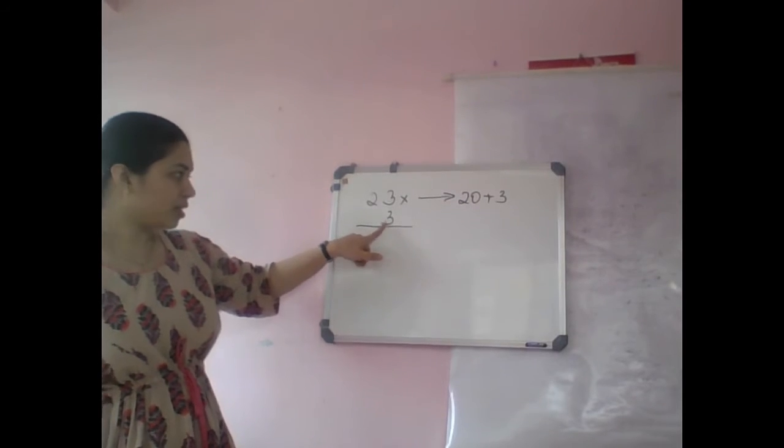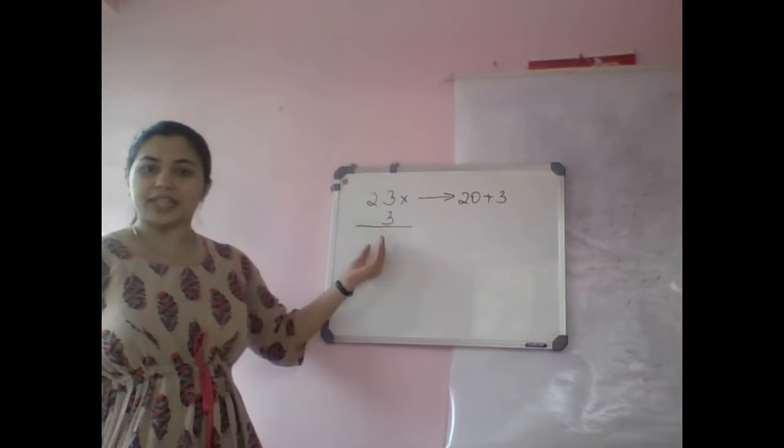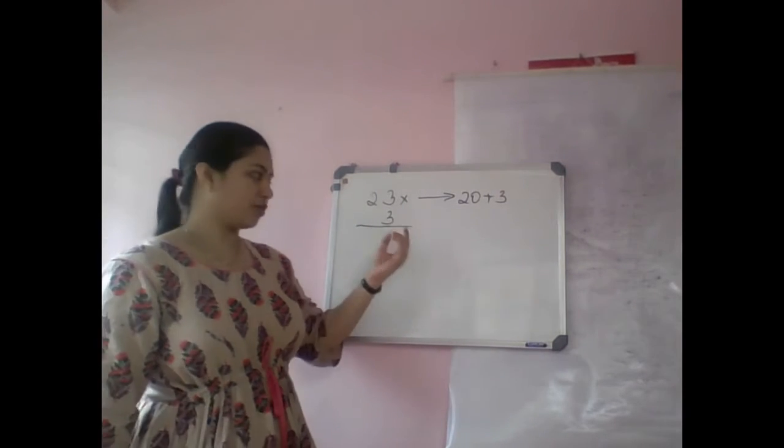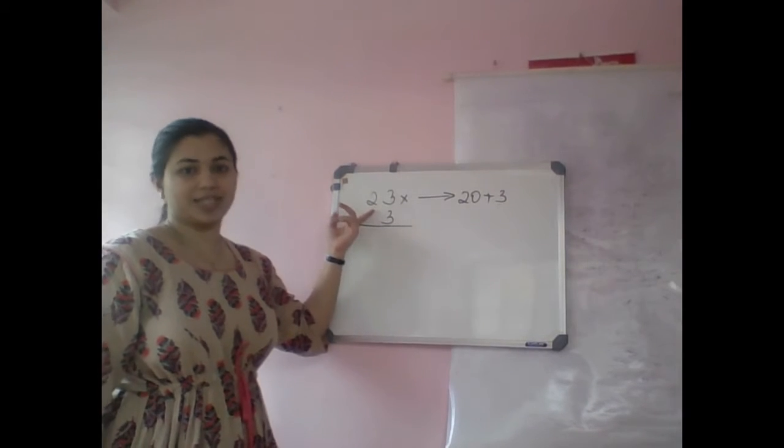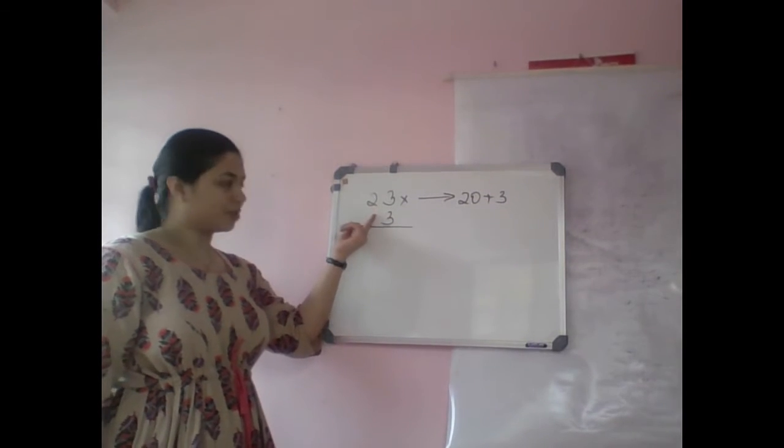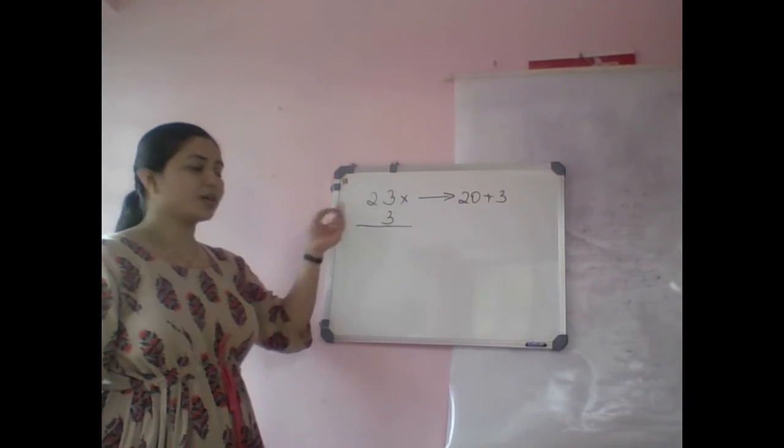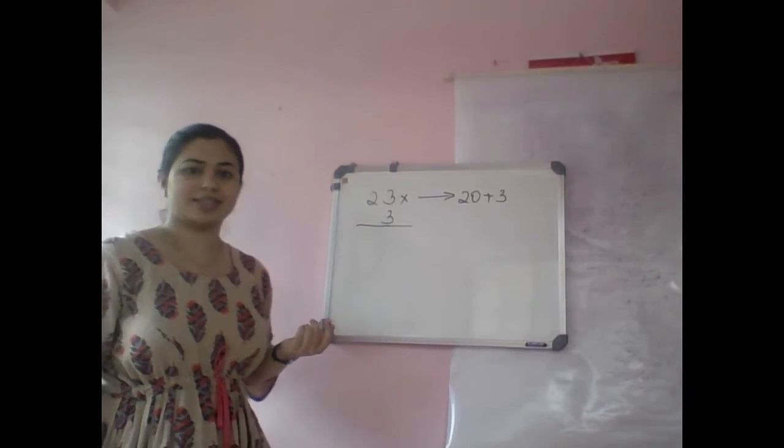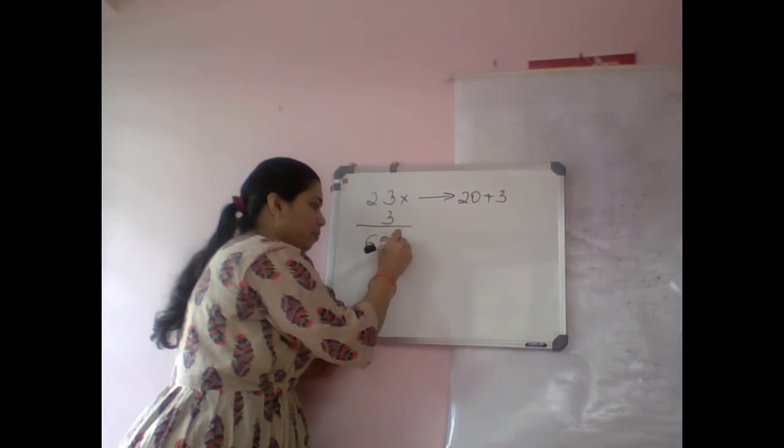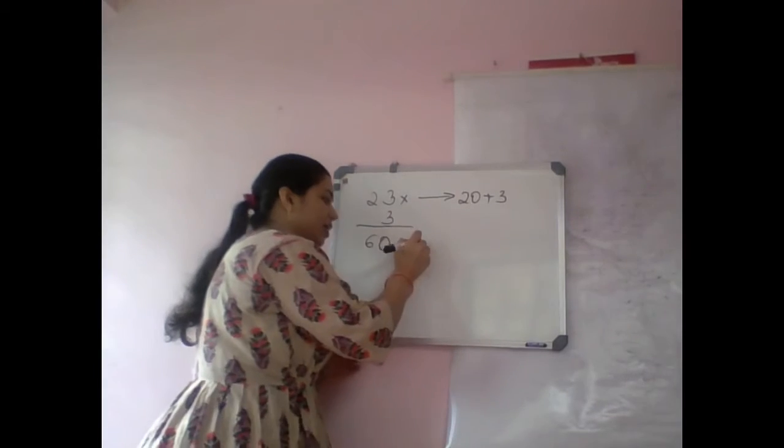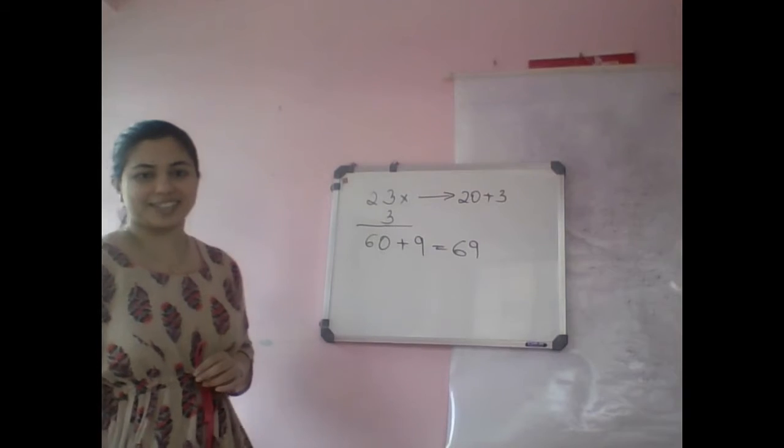First multiply three with 2, and now 20. Write this as 20. So what is 3 times 20? 60. So 60 plus 3 times 3, that is 9. So the answer will be 69. Let's try few more examples.